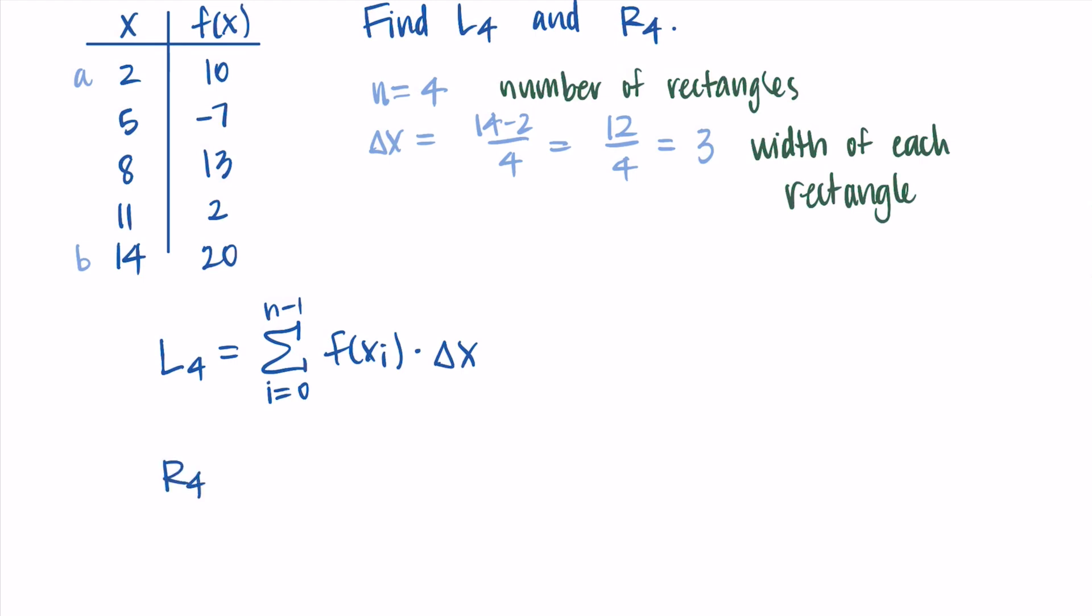Then for the right Riemann sum, this is going to be similar. But instead, we're going to start our sum at i equals 1. So we're starting at the right endpoint. And we're going all the way to the last endpoint. So we go up to n. And it's the same thing that we're summing, f(x_i) times Δx.